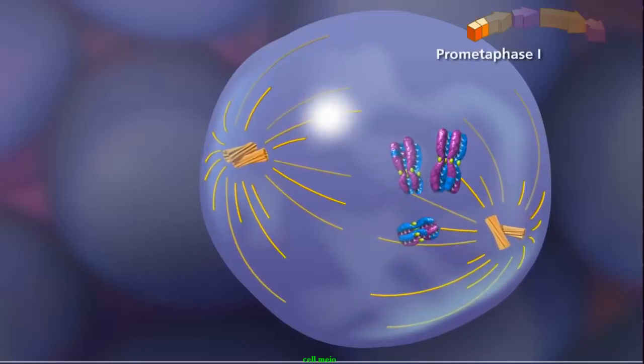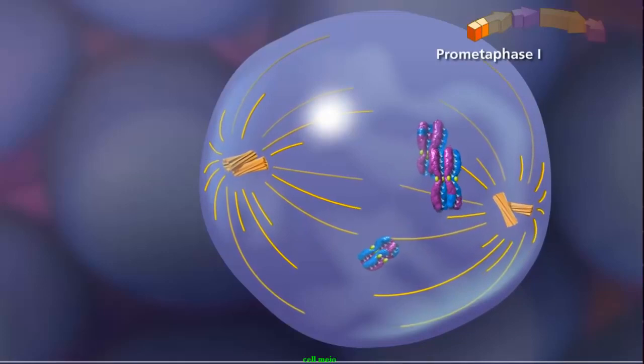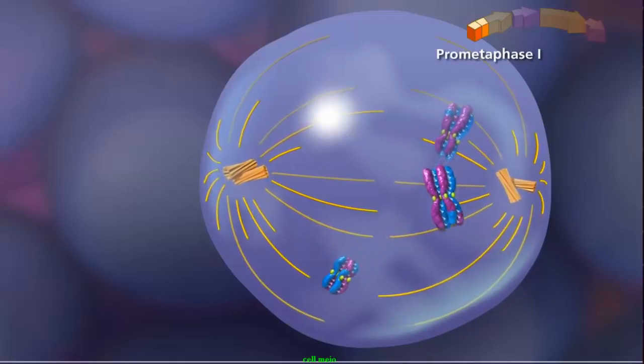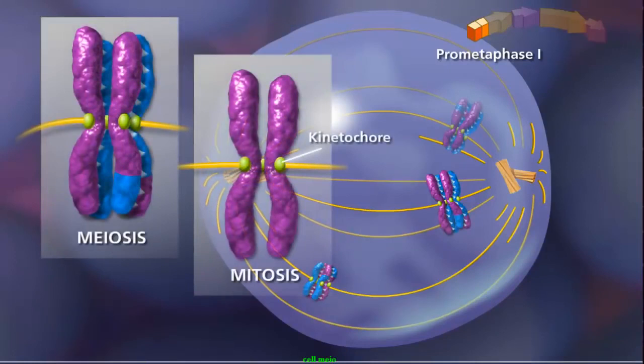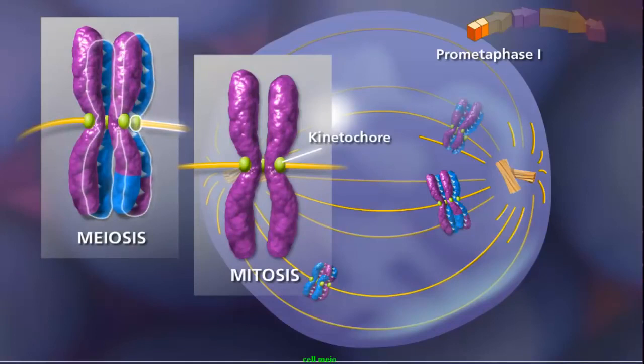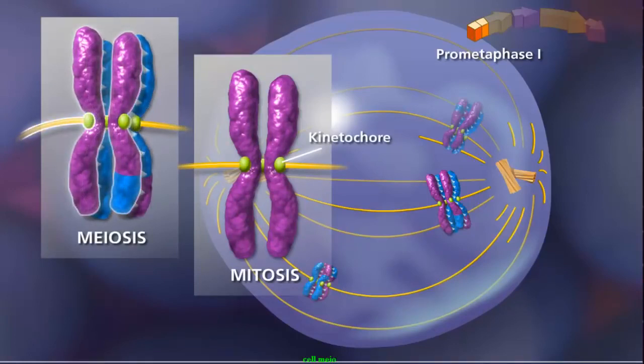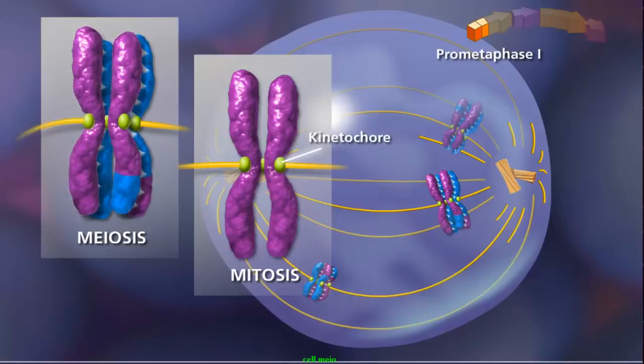In prometaphase I, with the paired centrioles in place, the meiotic spindle is fully formed. The sister chromatids attach to the spindle fibers by their kinetochores. Here, another key difference between mitosis and meiosis occurs. Because of synapsis and crossing over in meiosis, homologous chromosomes remain aligned, so that a pair of sister chromatids is attached to only one pole by the kinetochore microtubules.